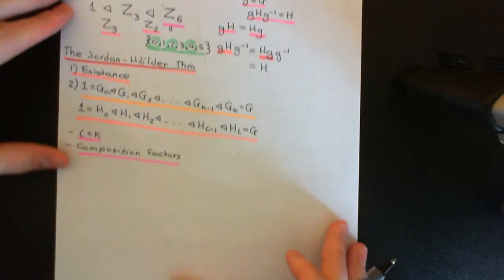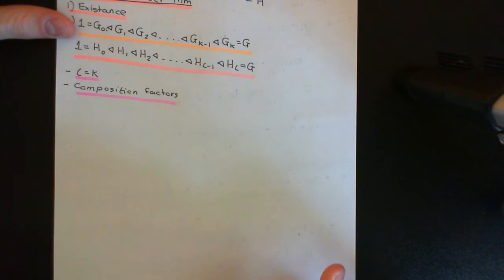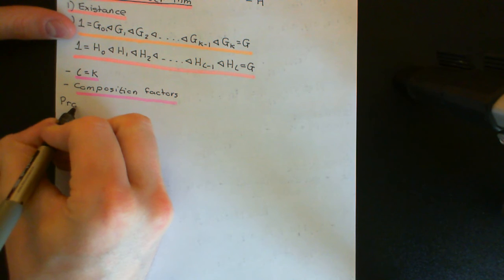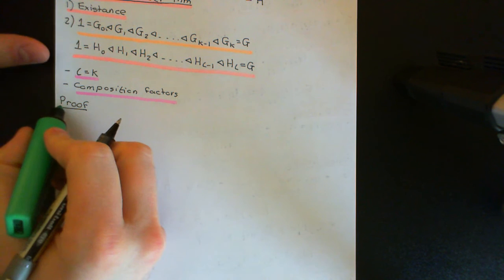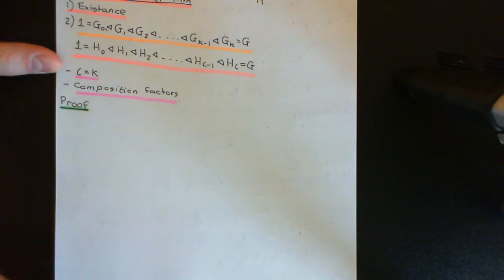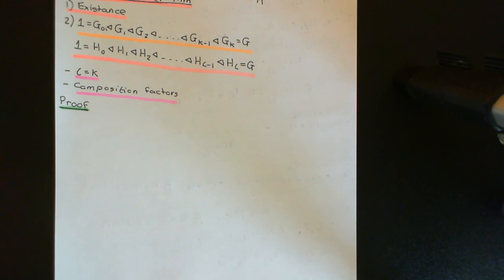We're going to do this by a proof by induction on the order of the group. We'll start off by seeing that the theorem is true for a group of order one, then assume it's true for any group of order less than a certain value n, and then prove it's true for a group of order n. Then we can conclude it's true for groups of order two, three, four, and so on — proving it's true for all finite groups.